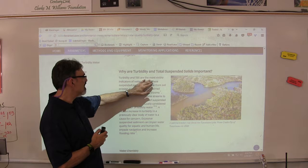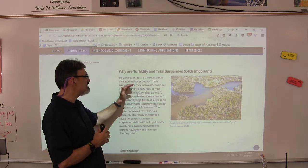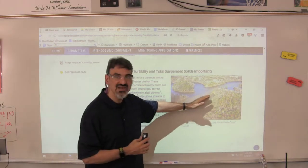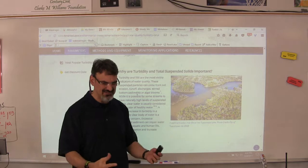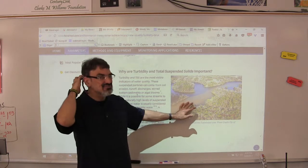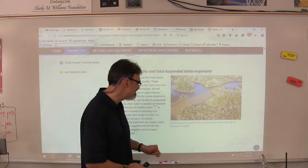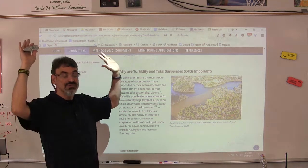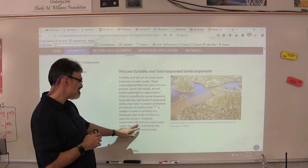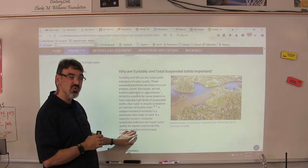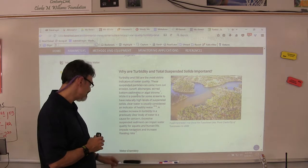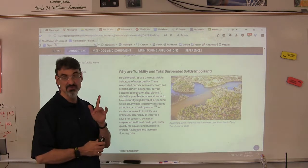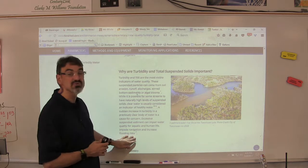Now turbidity is one of the most important visible indicators of water quality because if you see a creek or a stream or a lake that's really cloudy and brown and it's not from algae or an algal bloom or red tide or things like that, that's considered a problem. That tells you, whoa, there's something going on there. So excessive suspended sediment can impair water quality for aquatic life and human life and impede navigation and increase flooding risks. Let me repeat that, increase flooding risks.